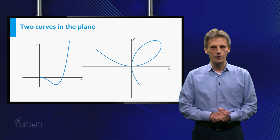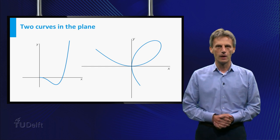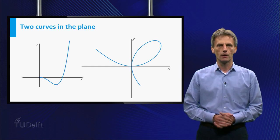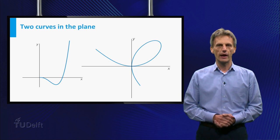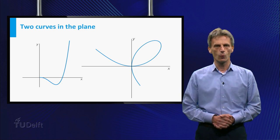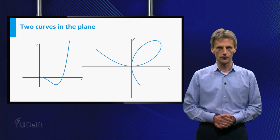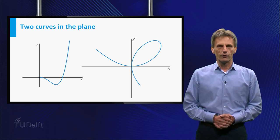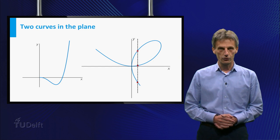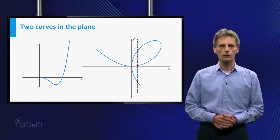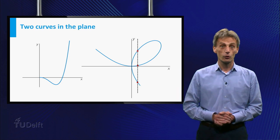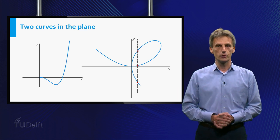Have a look at these two curves in the plane. The one on the left is the graph of a function, meaning that for each x value that is involved there is precisely one corresponding y value. The curve on the right is not the graph of a function, as you can see by looking at the vertical line shown here, which intersects the curve at three different points.